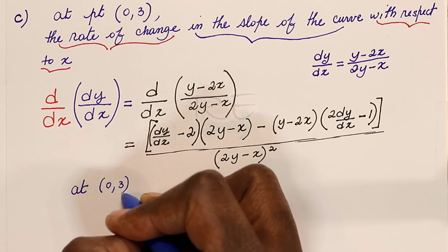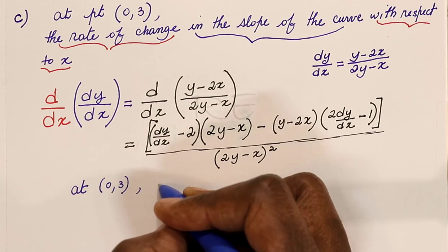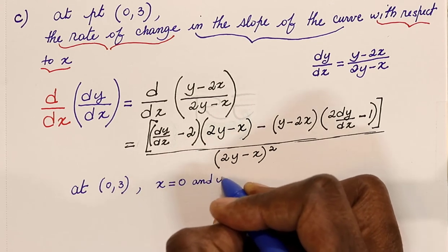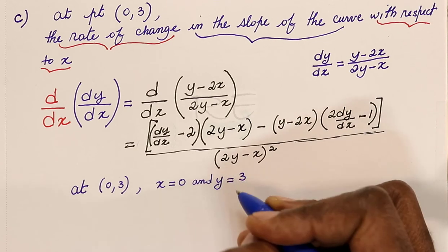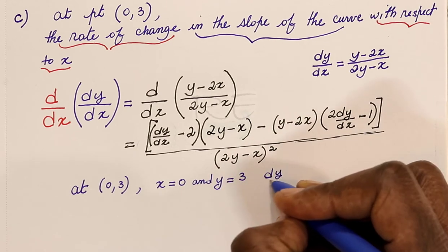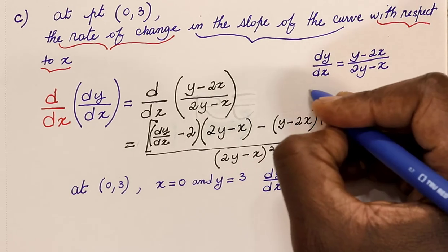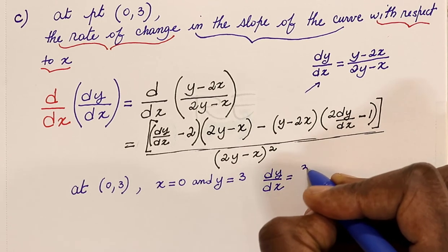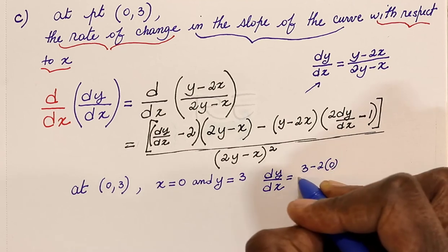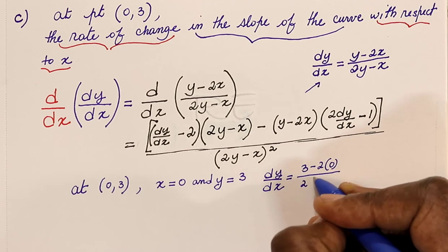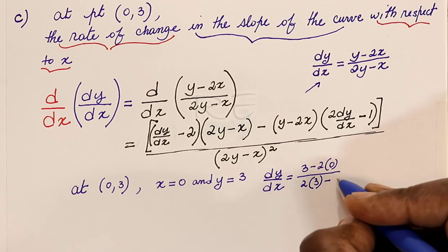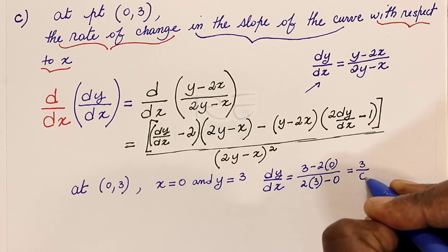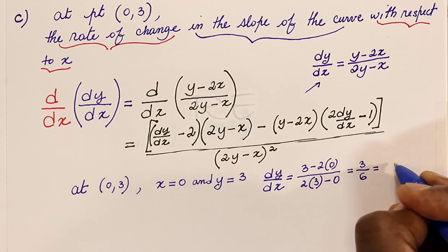At point (0, 3), x equals 0 and y equals 3. So dy dx becomes 3 minus 2 times 0, divided by 2 times 3 minus 0, which is 3 over 6, reduced to one half.